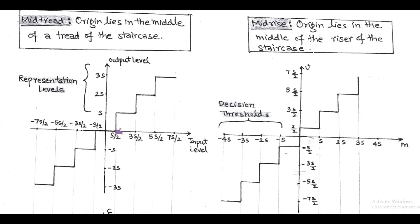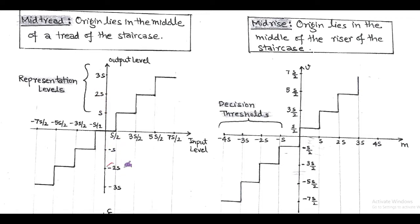Accordingly, we have input levels ±3S/2, ±5S/2, etc. And at the output level, that is called representation level, step size is marked as ±S, ±2S, ±3S, etc.